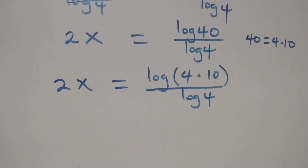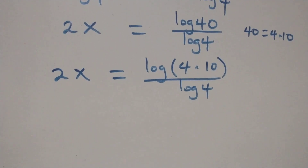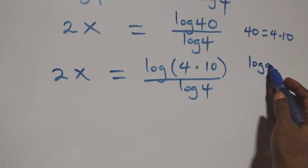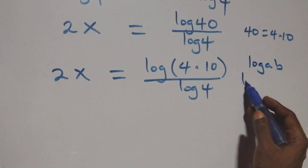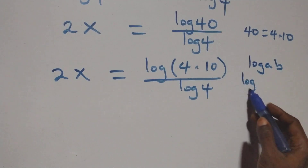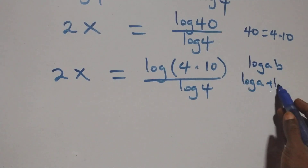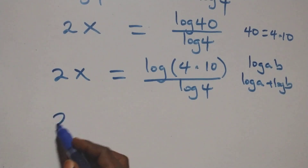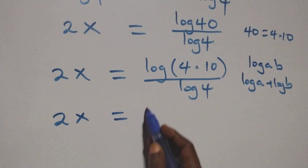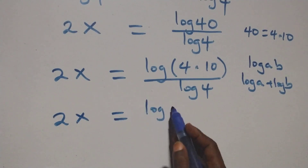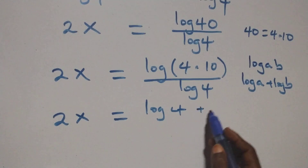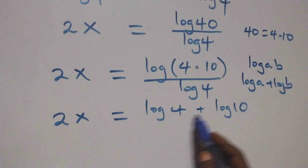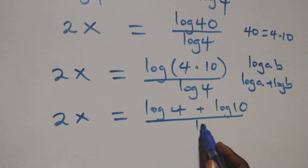This follows the log product rule: log(a times b) can be written as log a plus log b. That is, 2x equals (log 4 plus log 10) over log 4.